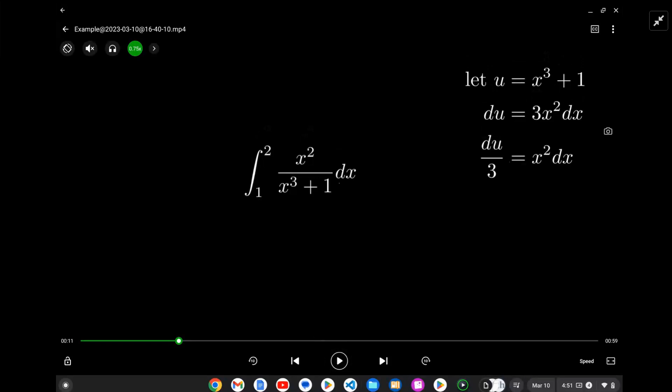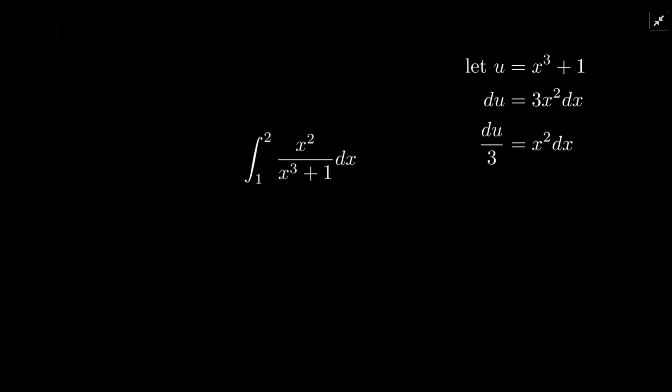Next, we want to change the limits because we're going to integrate in terms of u. So we'll change those limits in terms of u. When x is 1, u is 2, just going back to the denominator here. And when x is 2, u is 9. So let's put those substitutions in.